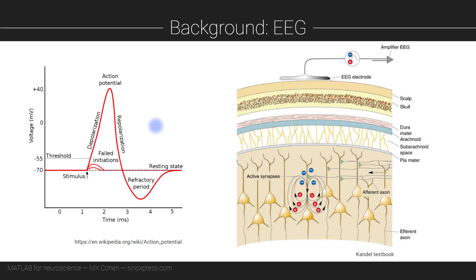However, it turns out that when populations of neurons that are geometrically aligned become synchronously active, then the summed electrical fields generated by those populations is powerful enough to be measured from outside the brain through an electrode placed on the scalp.